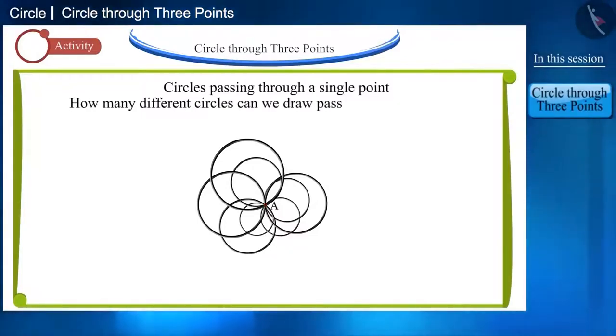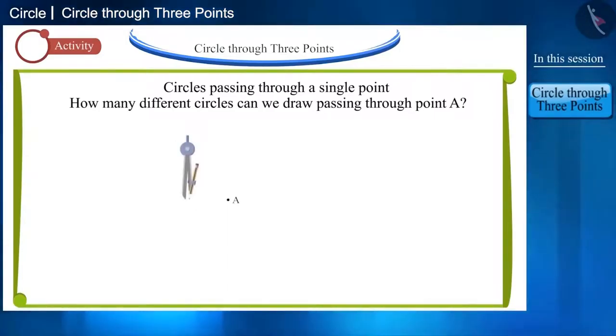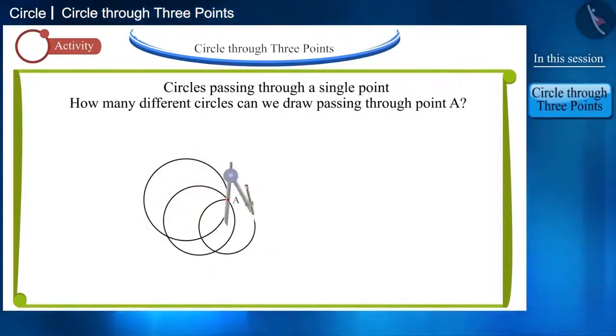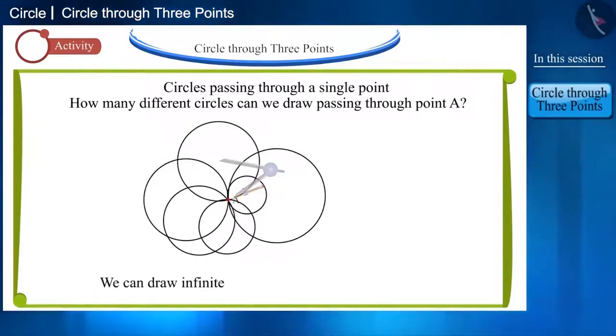How many different circles can we draw passing through point A? If we draw circles using a compass, we'll find that infinite circles passing through point A can be drawn.